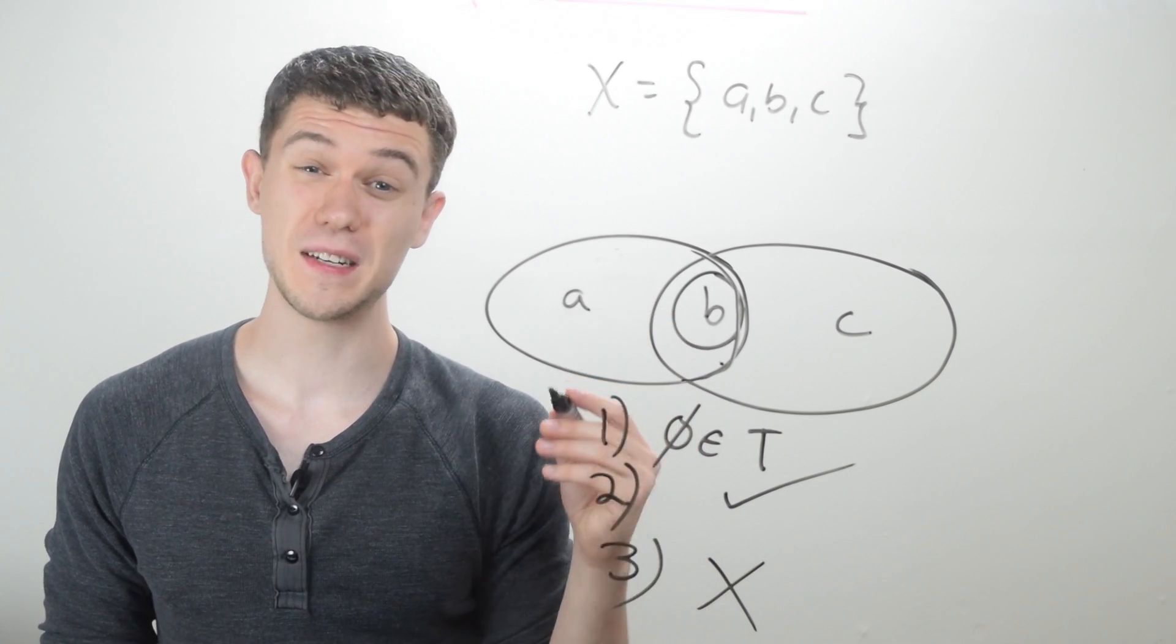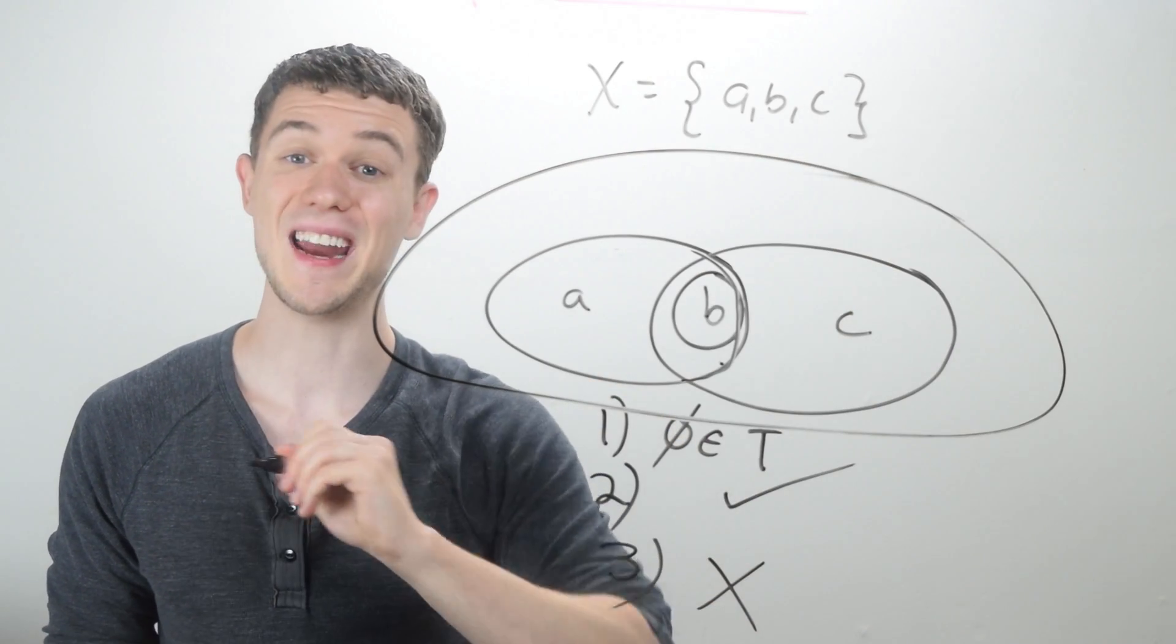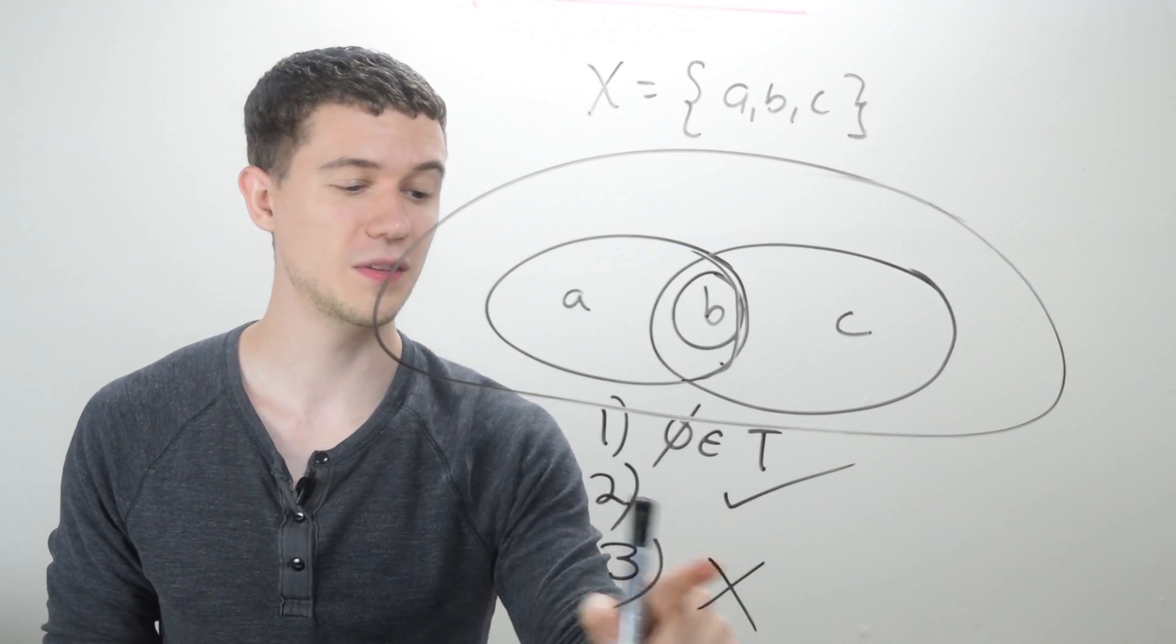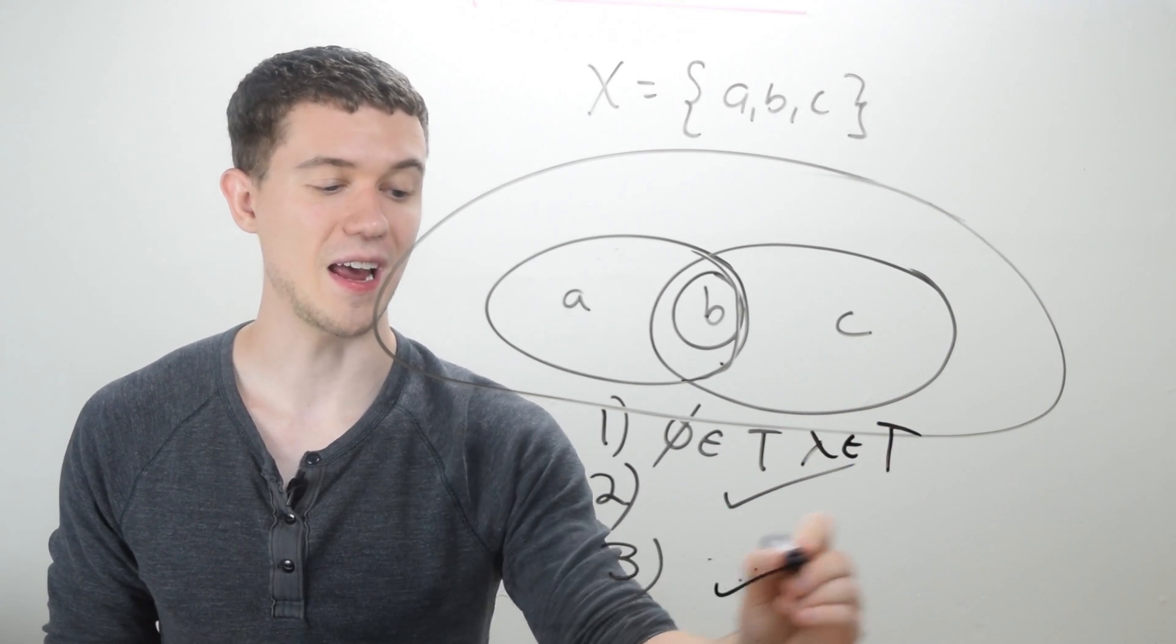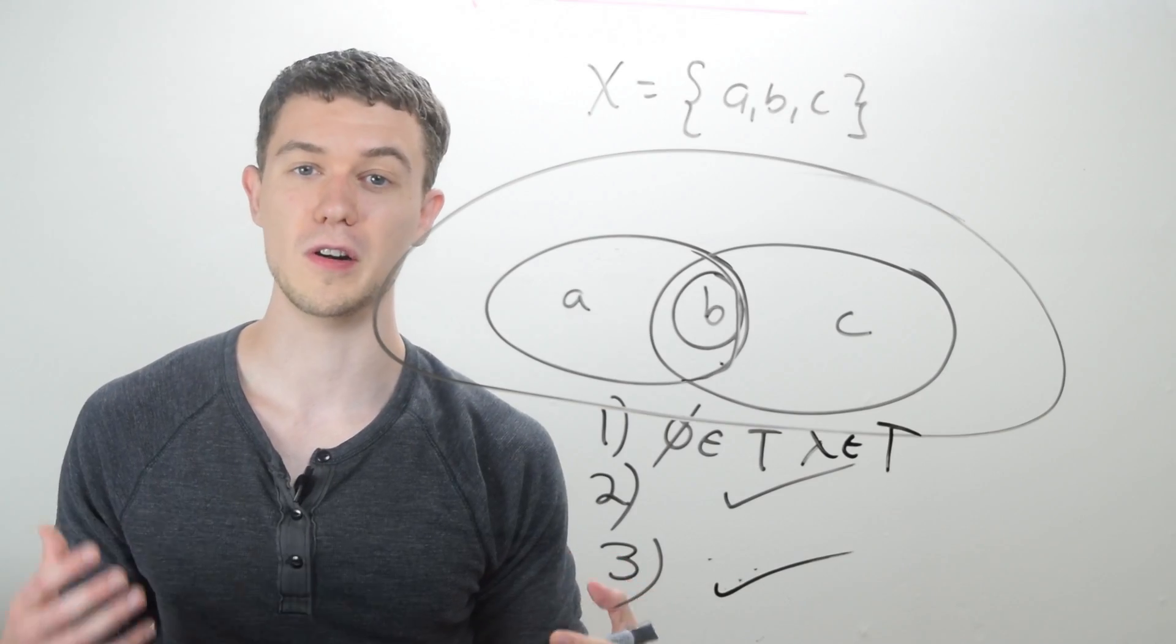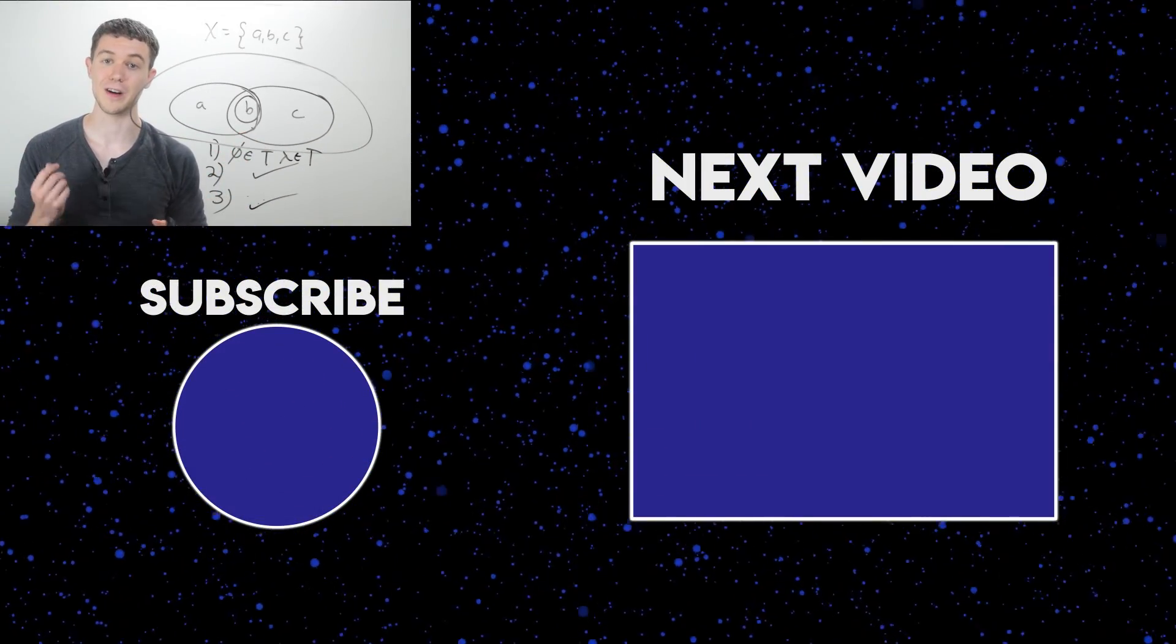So for this to be a real topology, I need a big circle containing all of them. So if I include this big circle, then X is in the topology, and we will be closed under arbitrary union. And so this picture here represents another topology on X.